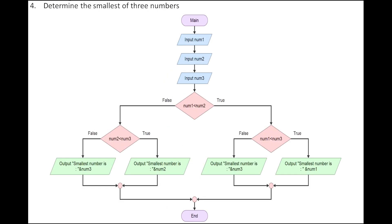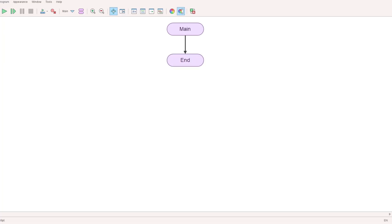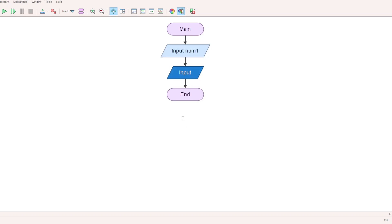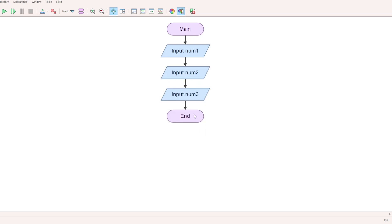Another question: Determine the smallest of three numbers. Accept three numbers one by one: Input num1, Input num2, Input num3. Then use decision symbols to find the smallest among them.